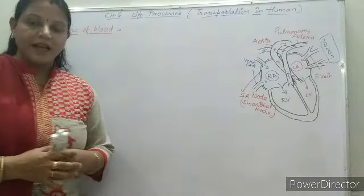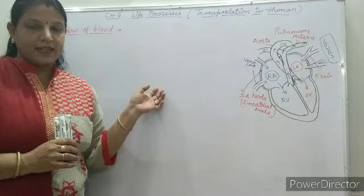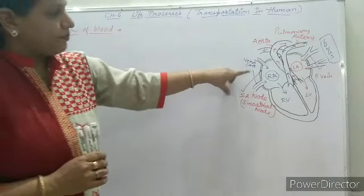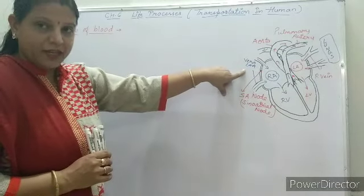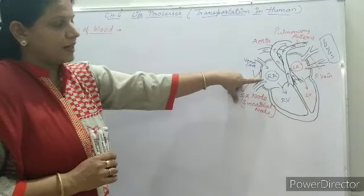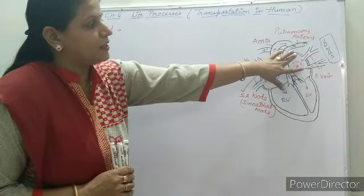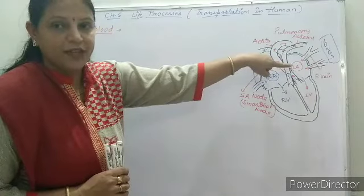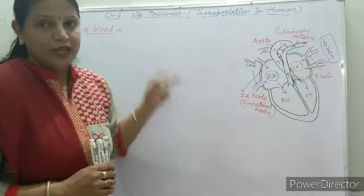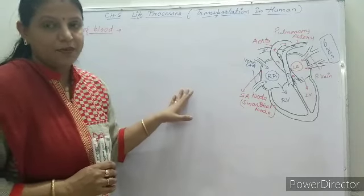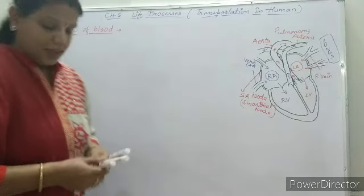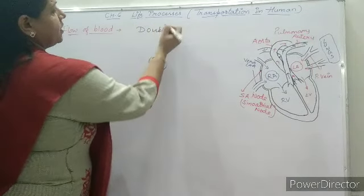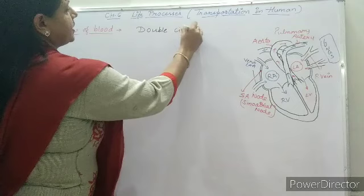During one cardiac cycle, blood flows twice through the heart. The first time, deoxygenated blood from vena cava enters into the right atrium, and the second time, oxygenated blood from the lungs enters into the left atrium. This means there occur two types of circulation, and such type of circulation is termed as double circulation. In human beings, double circulation occurs.